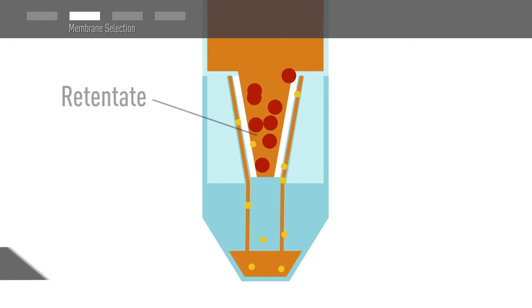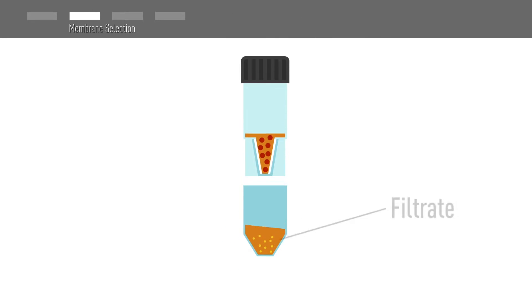The concentrated sample is referred to as the retentate. The molecules and contaminants in solution that are small enough to pass through the pores of the membrane are collected in the filtrate.